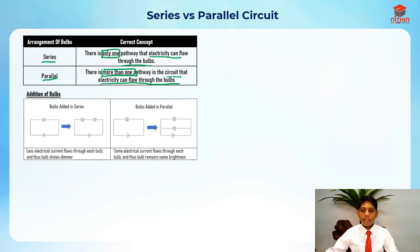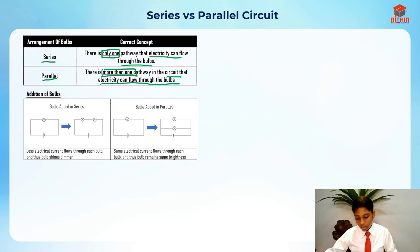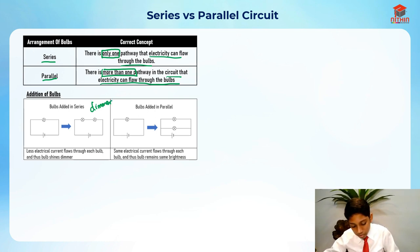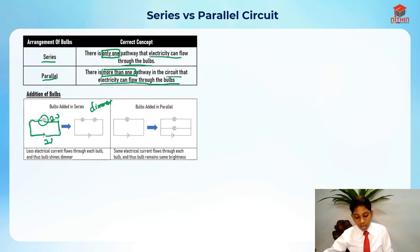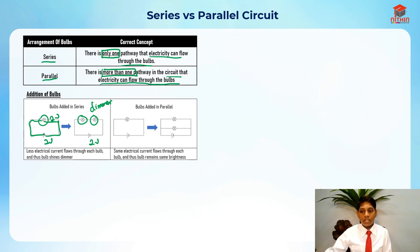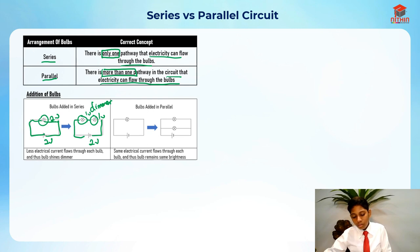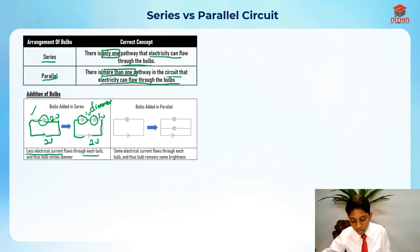For the addition of bulbs in a series circuit, if we add a bulb in series, there will be less electric current flowing through each bulb and thus the bulb shines dimmer. Because the battery voltage is shared — if the battery is two volts and there are two bulbs, each bulb only gets one volt. Thus the bulbs shine dimmer.